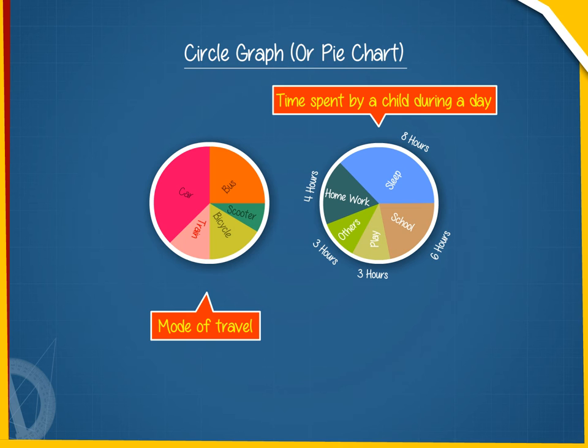A pie chart is a circular disk divided into component sectors with areas proportional to the size of the corresponding components.